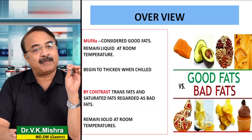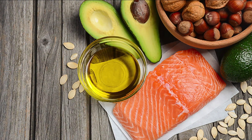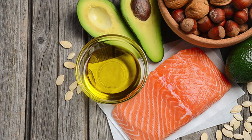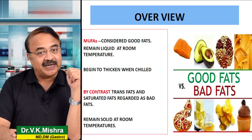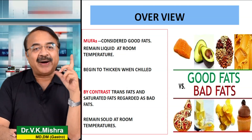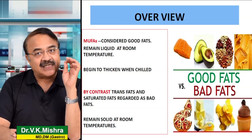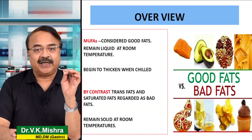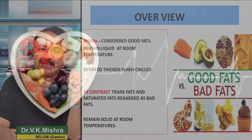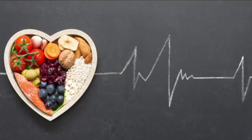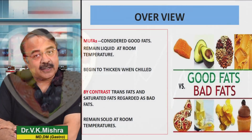इसका मतलब ये है कि जितने भी तेल हम इस्तेमाल करते हैं, वास्तव में उनमें MUFA की amount काफी ज़्यादा होती है. जैसे ही हम chill करते हैं, या deep freezer में रखते हैं, तो ये ठंडे होने लगते हैं, लेकिन वास्तव में ये जमते नहीं हैं. By contrast, जितने में trans fat होते हैं, या saturated fat होते हैं, वो वास्तव में bad fat की category में माने जाते हैं. ऐसा माना जाता है कि ये room temperature पर वास्तव में solid हो जाते हैं.